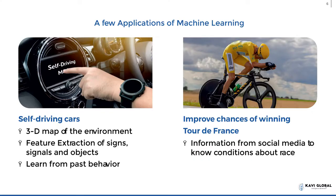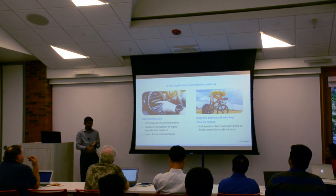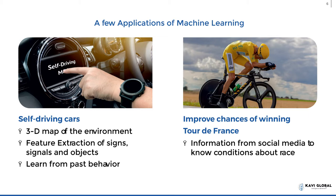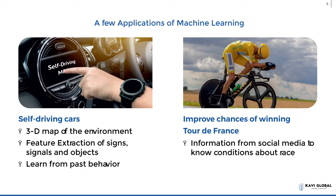Self-driving cars are one application of machine learning. There are sensors interior and exterior to the car which identify objects. The car needs to distinguish between a person versus a signal. Machine learning helps in identifying objects — if I see an object, the car should identify it as a man versus a lamp post. Then it predicts the movement: here is a man, so probably he will walk; here is a lamp post, it will not move. Based on past patterns, the system predicts how the object will behave.